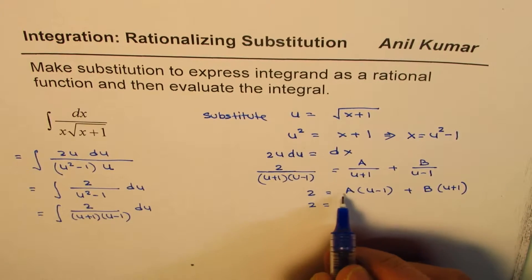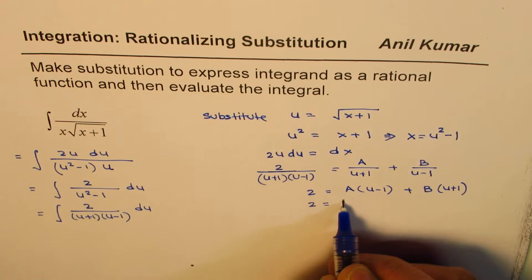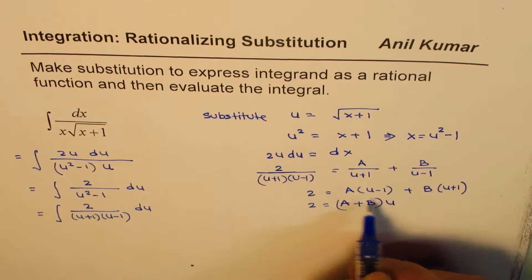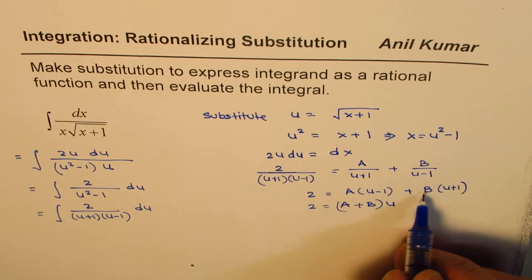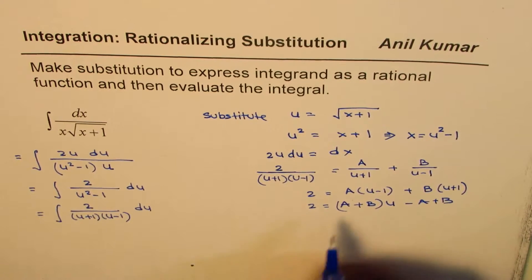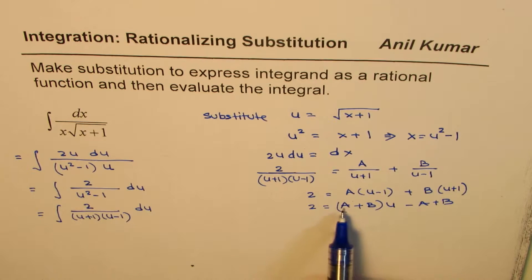So that is 2 equals to if I expand it, we get u a plus b times u and b minus a or you can say minus a plus b. So if I expand I get a u b u so I have taken u common a plus b times u minus a plus b.